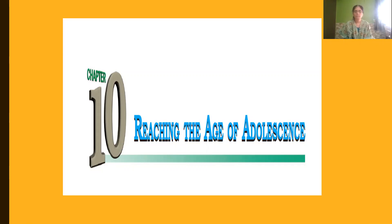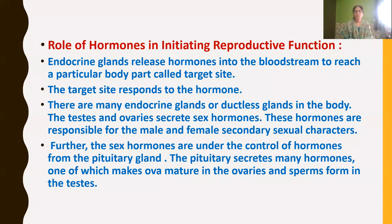Hello children, welcome to our science session. Let's continue our chapter 10, Reaching the Age of Adolescence. In the last session we discussed about the role of hormones in initiating reproductive function — how hormones initiate the function of reproduction. Endocrine glands, which are otherwise called ductless glands, release hormones into the bloodstream to reach a particular body part, what we call the target site. Once the hormone reaches the target site, the target site responds to the hormone.